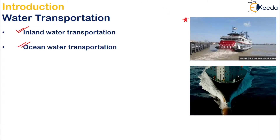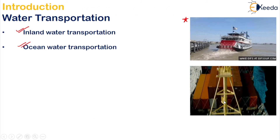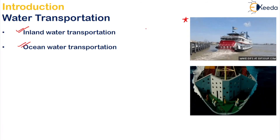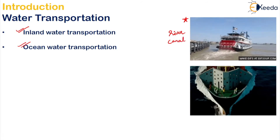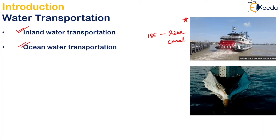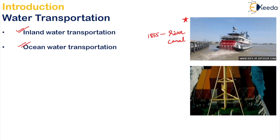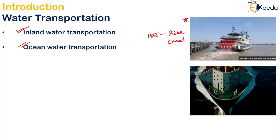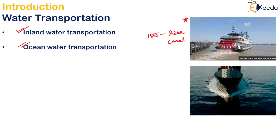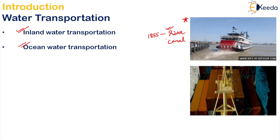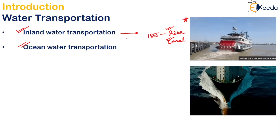As you can see in the diagram, we have inland and ocean water transportation. Inland water transportation is either in the form of river or canal. River transportation became significant in 1855, and many commercial towns came into existence on the banks of important rivers like the Ganga. Rivers are natural water channels, whereas canals are man-made ones. Inland water transportation has certain restrictions and limitations.